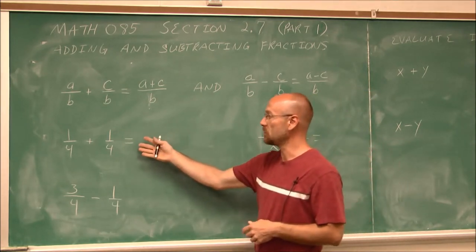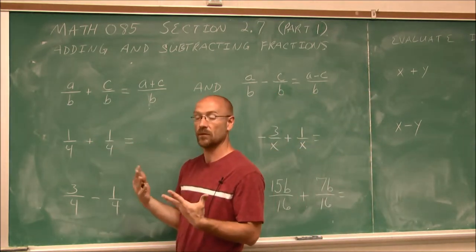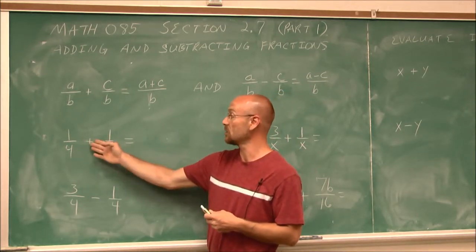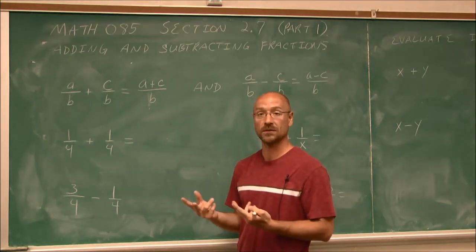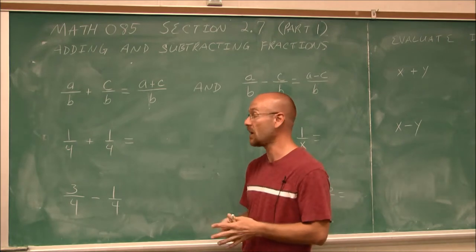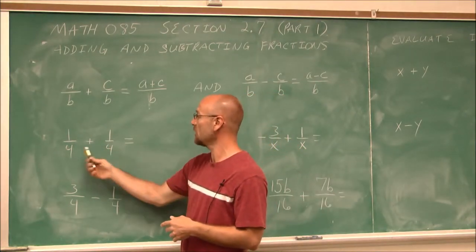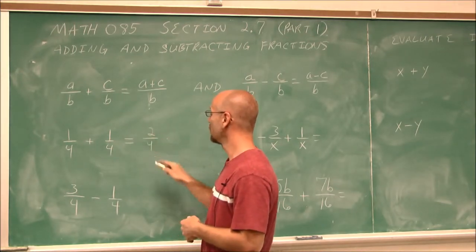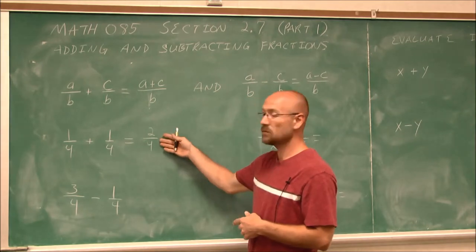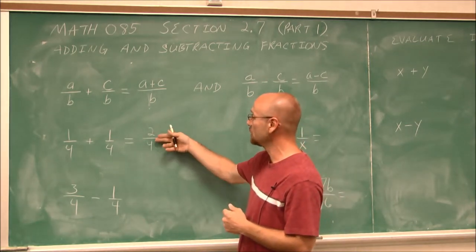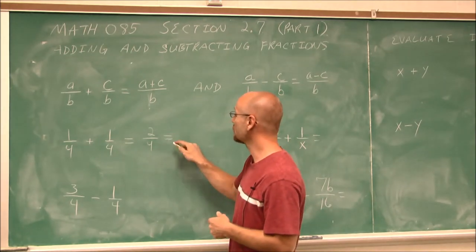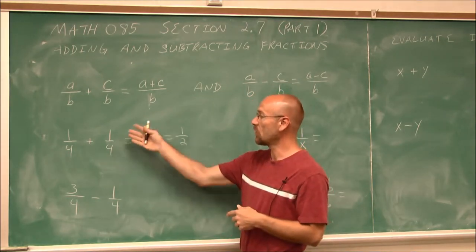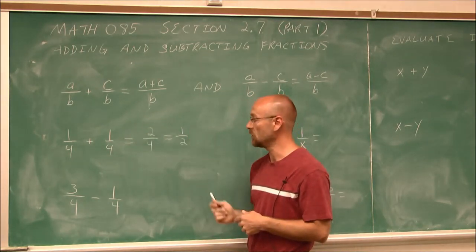So let's look at an example. If I have 1 fourth plus 1 fourth, something that we actually encounter on a regular daily basis, maybe I have a quarter, another name for this, a quarter plus a quarter. Well, if I had two quarters, I'd have 50 cents, as an example, or half a dollar. So let's see how that works. If I have 1 fourth and 1 fourth, same denominator, 1 plus 1 is 2 quarters, or 2 fourths. Well, when it comes to fractions, we should always reduce them. And I know that 2 and 4 have a common factor of 2. So I can rewrite this by dividing a 2 out of each of these to get 1 half. So 1 fourth plus 1 fourth is 2 fourths, which reduces to 1 half.